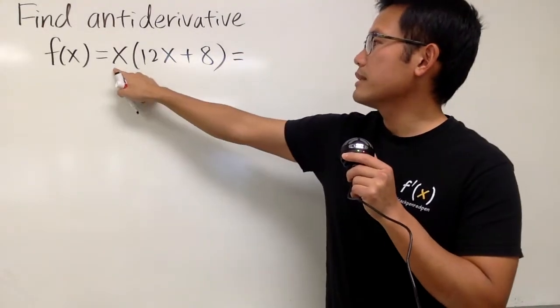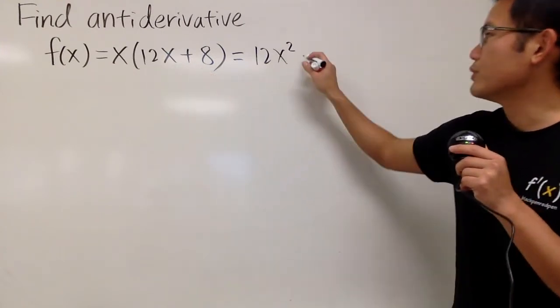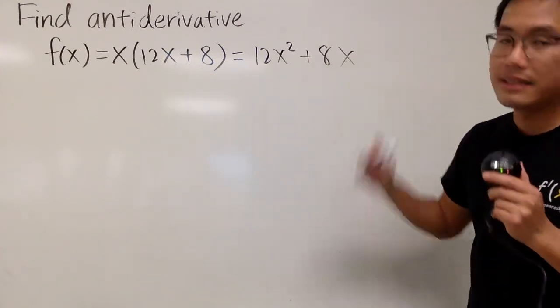First of all, distribute, so x times this, which is 12x squared, and then this times this, which is plus 8x, like this.